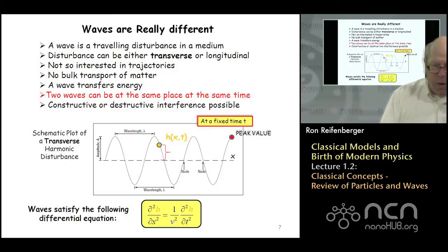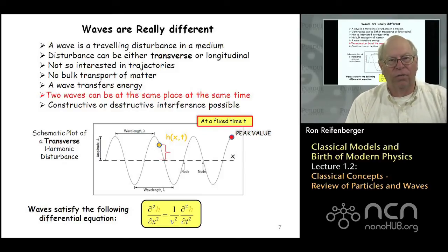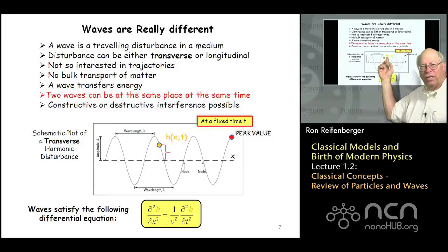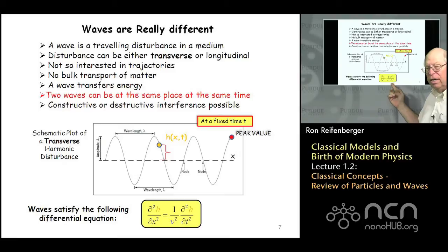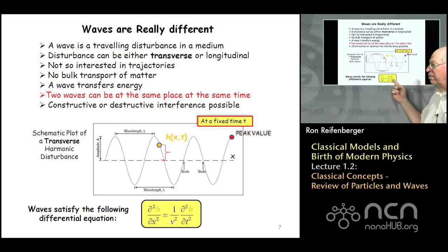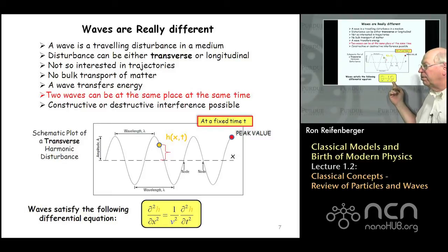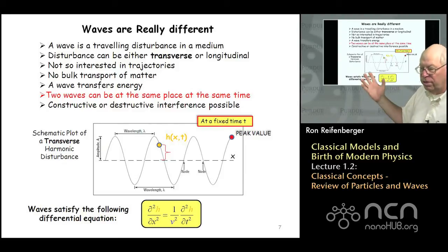What is the equation of motion for a wave? The standard wave equation is a second-order differential equation: the second derivative of displacement h with respect to position x equals 1 over v squared times the second derivative of displacement with respect to time. The quantity v is the velocity of the wave — how fast the wave moves through the particular medium.